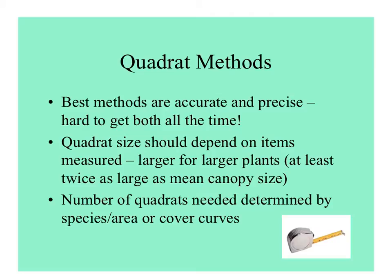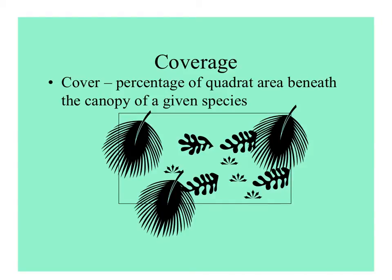The best methods for sampling are accurate and precise, but it is kind of hard to do that well in a reasonable amount of time. The size of the quadrat depends on the items you're measuring — big things like trees are sampled with larger plots, and the smaller the plants, the smaller the plots are reasonable. You always need to figure out the number of quadrats to adequately sample the diversity present using species-area curves.